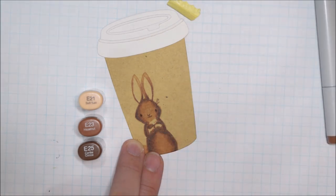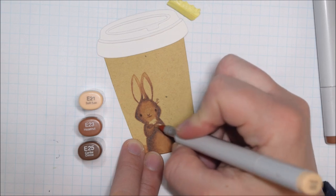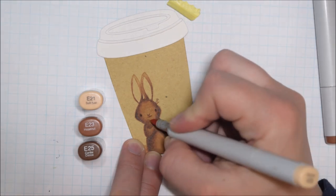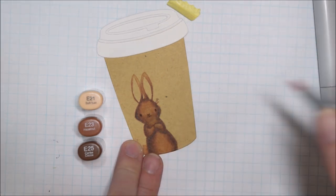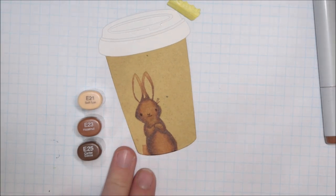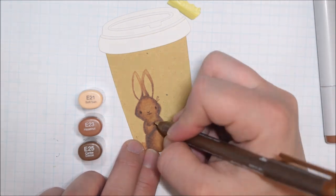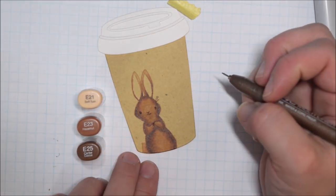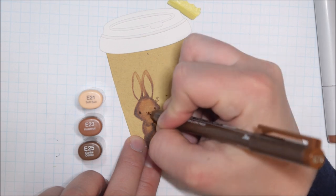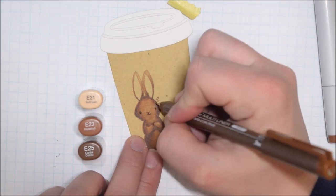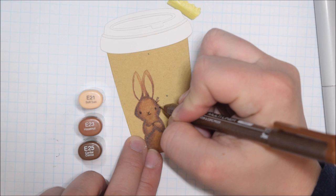I'm also using the E25 to really define some of the lines, so I'm not using it as much as a layer of color as like an outline. I am also going back in with the sepia pen to enhance any areas where I felt like the no-line coloring took too much away.